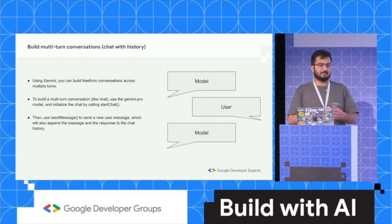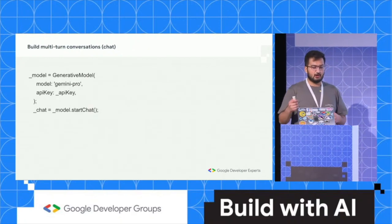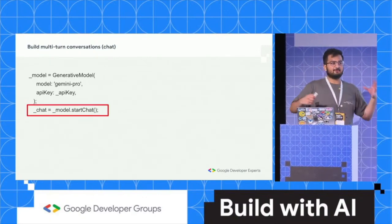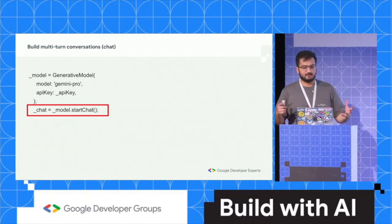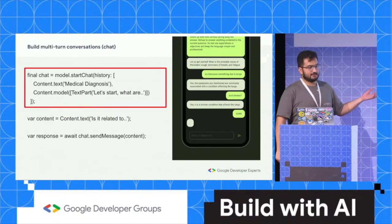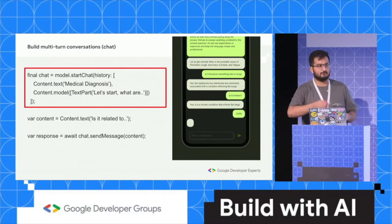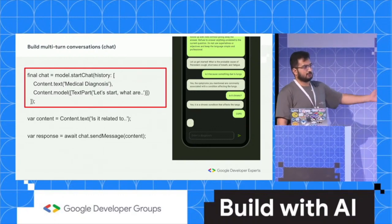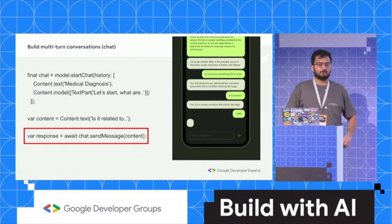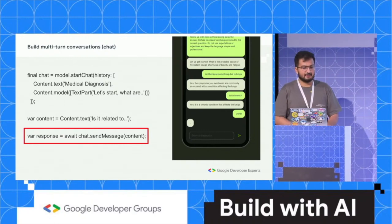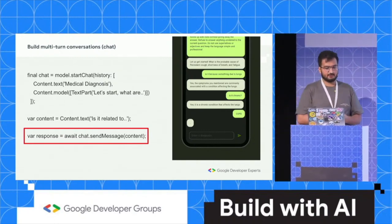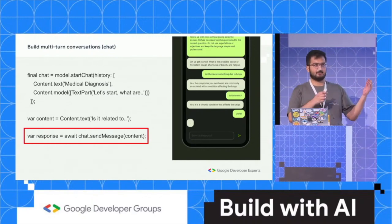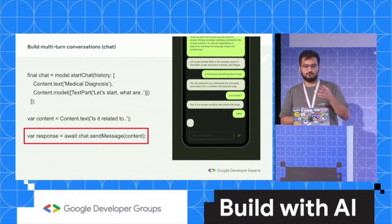With the Generative AI SDK, we get access to a chat object. When initializing your model, you can also initialize a chat simply by running model.startChat. Every time you want a response in a multi-turn chat, you can initialize it with a history variable for your model's chat. Once that is done, you create a new iterable content variable and pass it to your model with the sendMessage function. It would respond to that previous history and then also incorporate the new message.